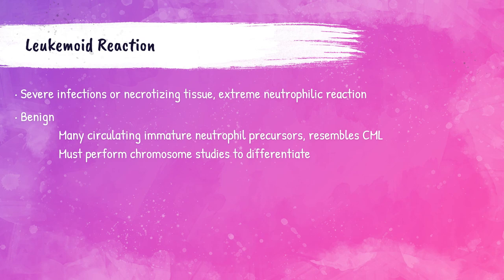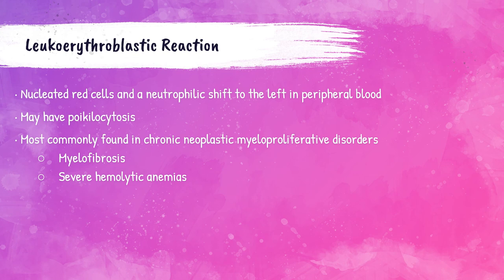A leukoerythroblastic reaction is when the patient has a left shift in their peripheral blood along with nucleated red blood cells. They may also have poikilocytosis, which is a variety of different shapes of red blood cells present in the peripheral bloodstream. Leukoerythroblastic reactions occur most commonly in patients with chronic myeloproliferative disorders like myelofibrosis — a cancer of the bone marrow that causes it to be replaced with fibrous scar tissue — and also in patients with severe hemolytic anemias.